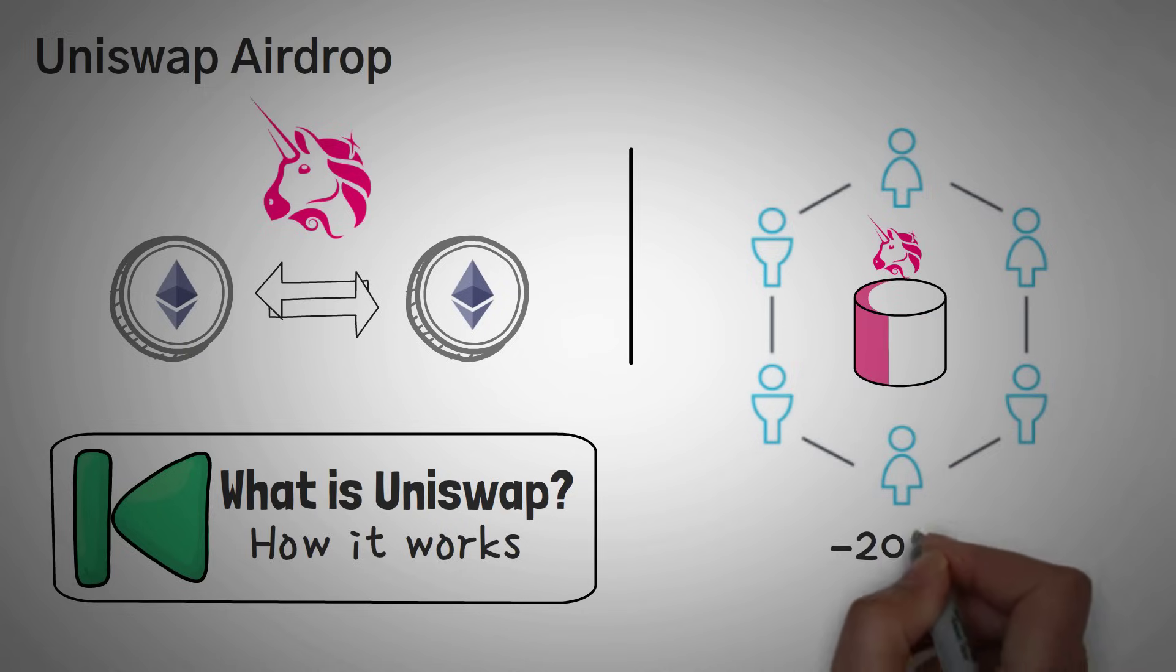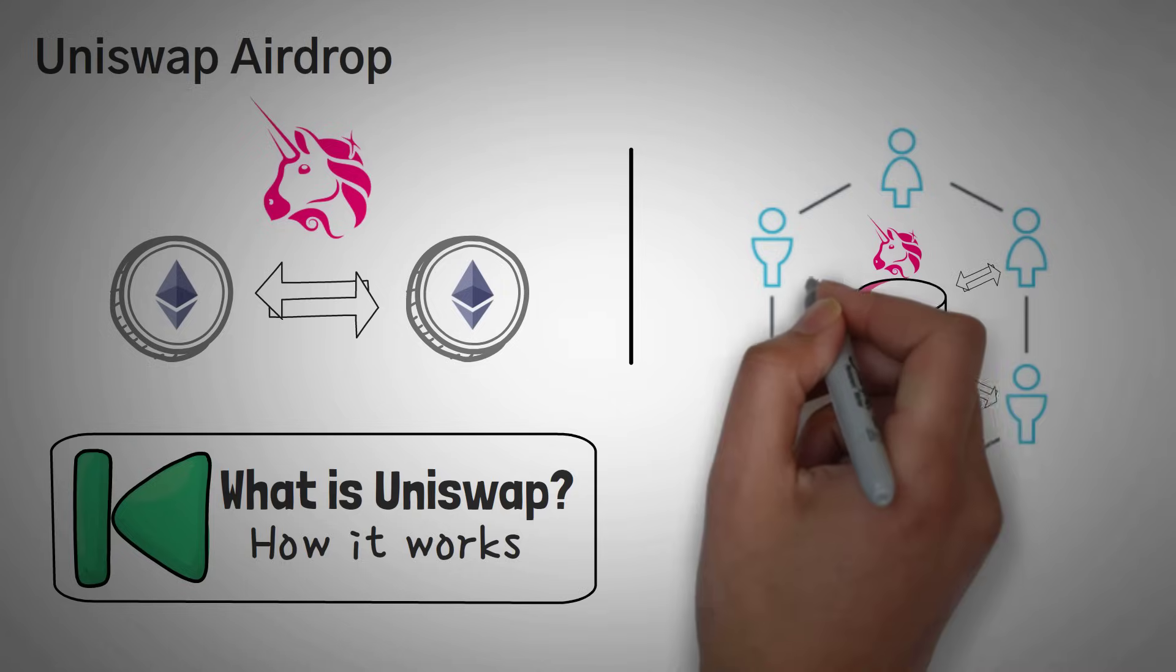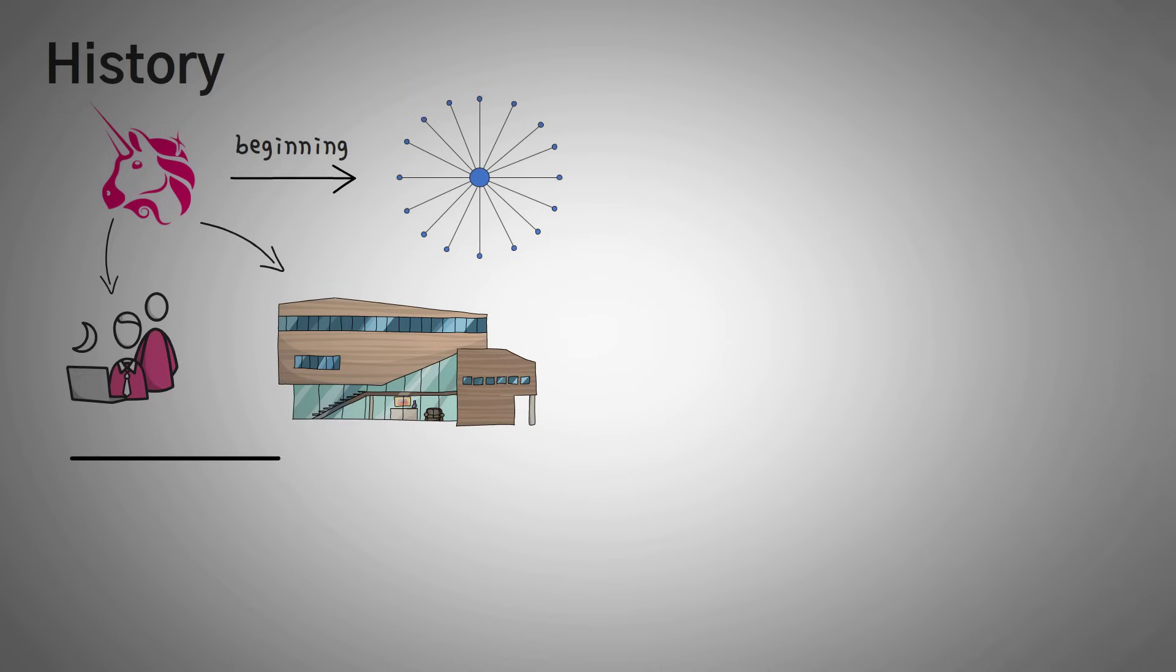Back in early 2018, Uniswap launched and allowed users to start swapping their tokens. You should know that Uniswap was actually a centralized application in the beginning. They had a headquarters and payrolled developers. Being in the crypto space, they wanted a way for their company to become more decentralized.